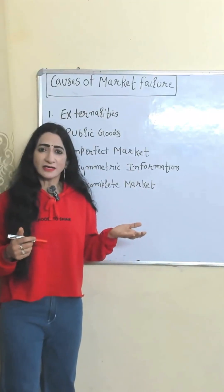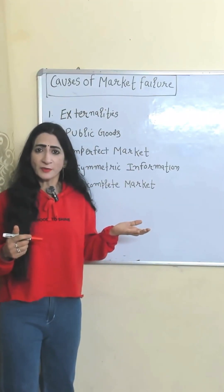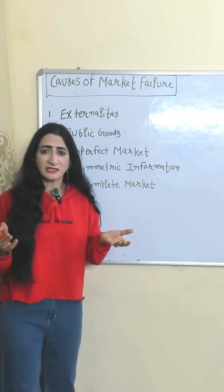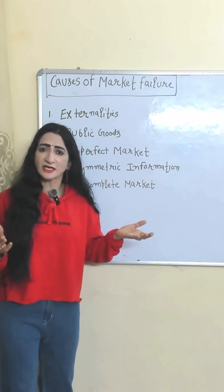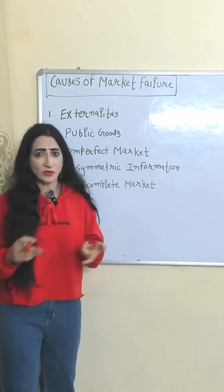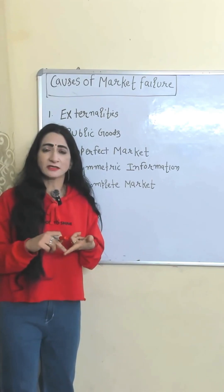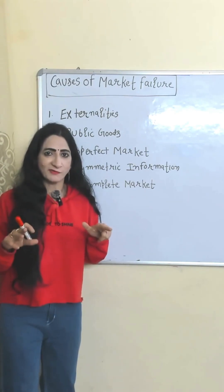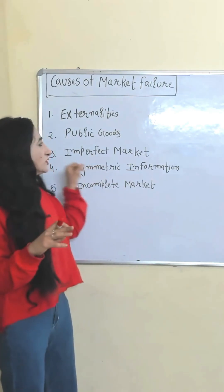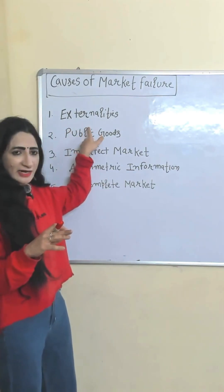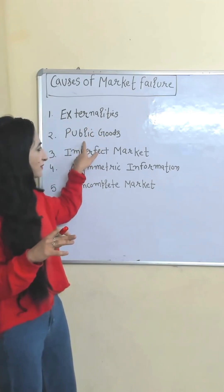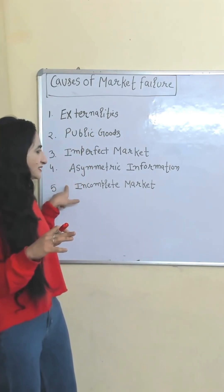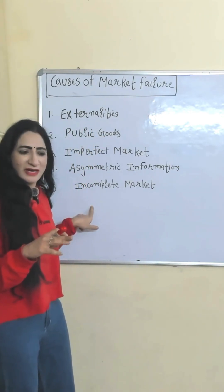When markets fail to produce and distribute goods efficiently, it creates negative consequences on the environment, society, and individuals. This is called market failure. The causes of market failure are externalities, public goods, imperfect markets, asymmetric information, and incomplete markets.